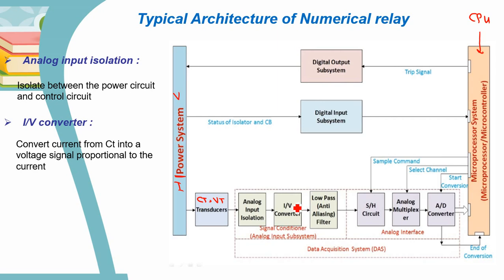For example, if we have a current from a current transformer, that current is converted to a voltage proportional to it. If we have the frequency of the power system, that frequency is converted into a proportional voltage — because the numerical relay and CPU deal only with voltage signals. That is the main function of the I-to-V converter.